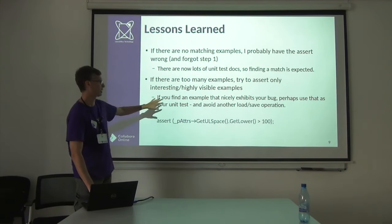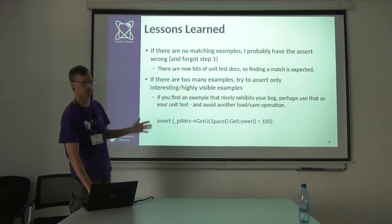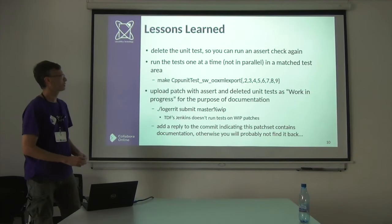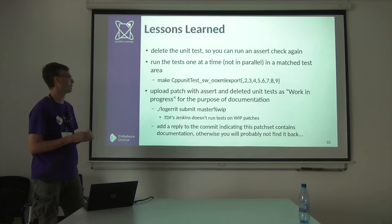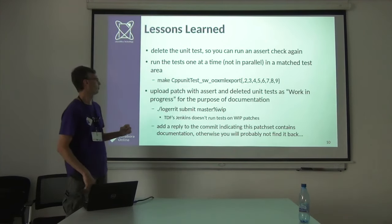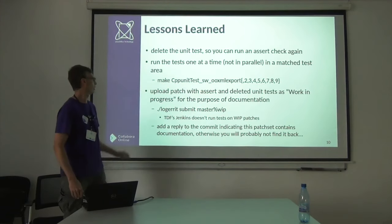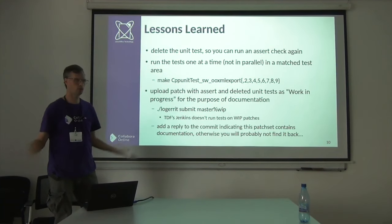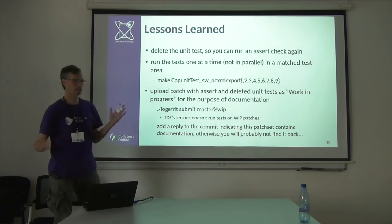You might be able to find an example that nicely exhibits what you're trying to fix and use it as your unit test, avoiding another load-save operation by reusing an existing test. Another lesson: delete the unit tests you find and then run the assert again — that way, if there are multiple matches in the same test, you can find them all. When you find one in a certain component like docx format, just run each one of the checks in that component in series, one after the other, instead of running the whole make check again. Find all the bugs in it, then run your full make check.